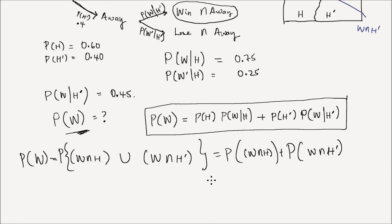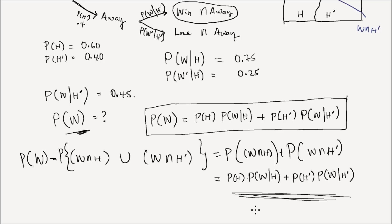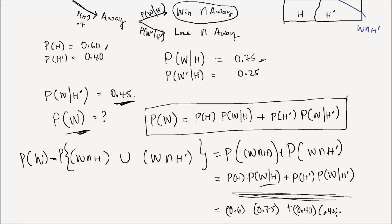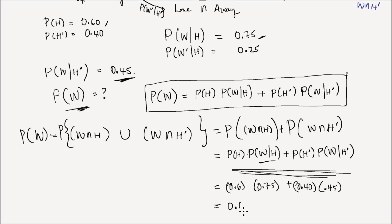In lesson number five we learned about the multiplication law of probability, and we said the probability of W intersection H is the probability of H times the probability of W given H. So now I plug in my numbers: the probability of H is 0.6, the probability of W given H is 0.75, plus the probability of H complement which is 0.40, times the probability of winning given away which is 0.45. And you get 0.633.